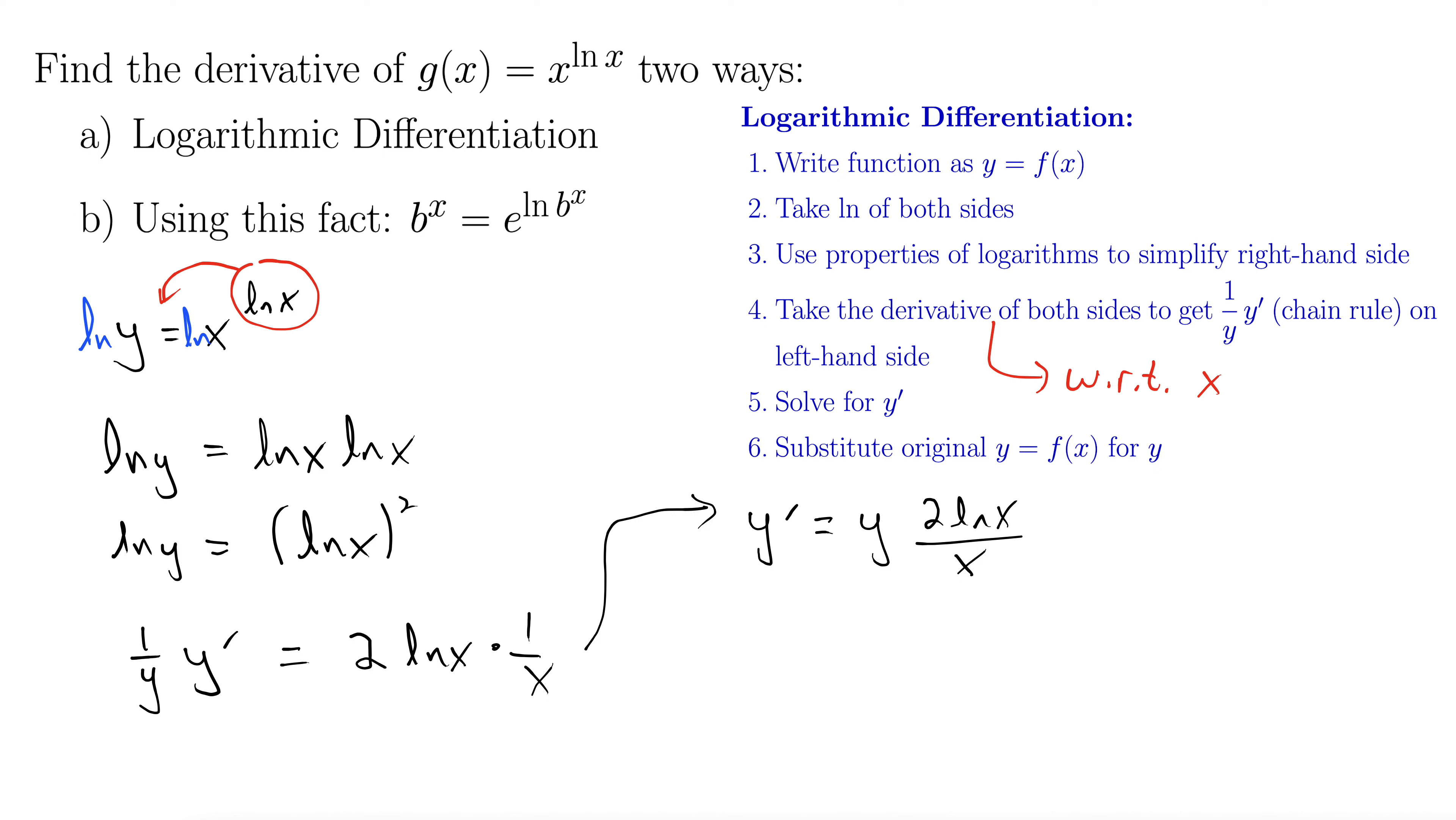And finally, step six, we substitute our original y equals f(x). Recall back at the very beginning of this whole process, we decided that y was x to the power of natural log x. So this gives us y prime equals x to the power of natural log x times 2 natural log x all over x.